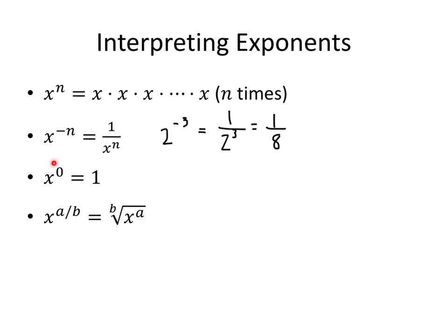Next, something raised to the 0 power just equals 1. And then finally, if we have something raised to a fraction as a power — so a divided by b in the exponent — that gives us a root. The most common root we'll see is something like x to the 1 half power, and that just means the square root of x.